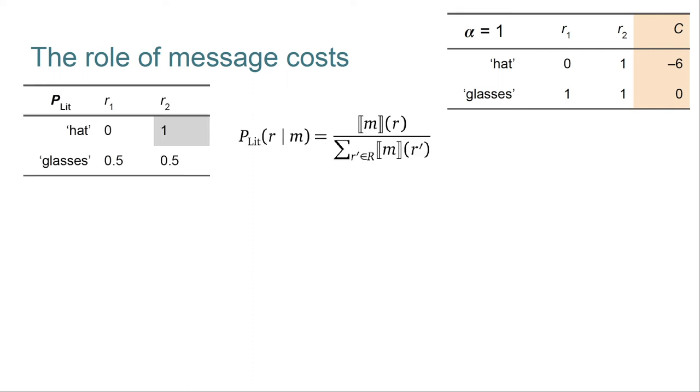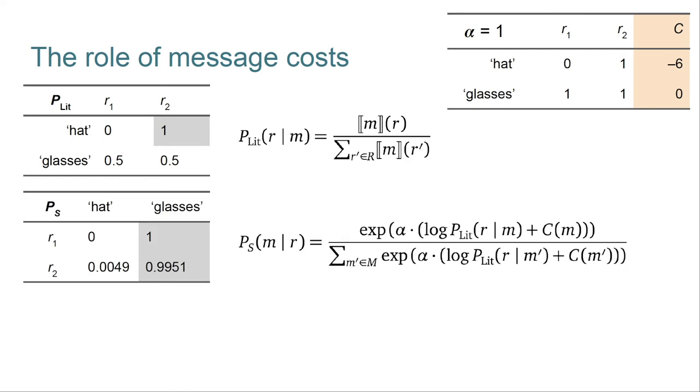The literal listener calculation is unchanged. And here's the full speaker matrix with its corresponding definition. And let's unpack this definition a little bit. At its core, this is what we saw before. The numerator has P_lit and the denominator is summing over those P_lit values. We'll ignore the alpha parameter for now. If you assume it's 1, then it can be left out.